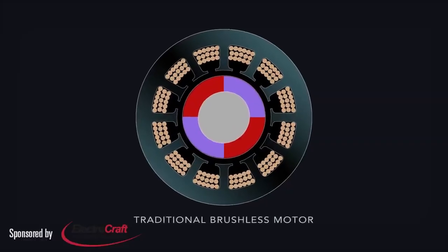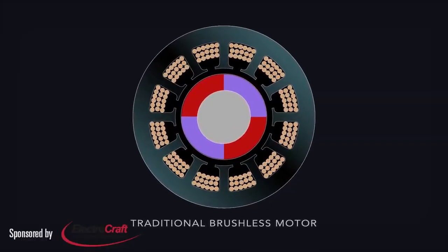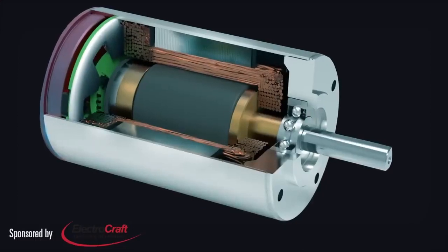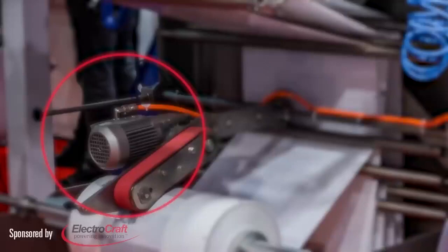These don't suffer from brush wear or arcing, but do need electronic current phase commutation. Basically, brushless motors are like shunt wound motors, except field flux comes from magnets instead of current through a winding.